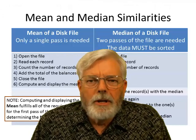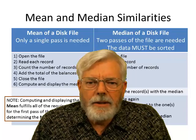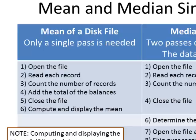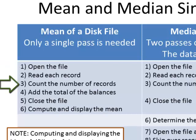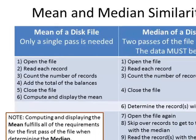When writing the program, there are some similarities between computing the mean and the median. For the mean, I need to open the file, read each record, count the number of records, and add a total of all those values. Then I can close the file and compute and display the mean — I just take the total and divide by the count.